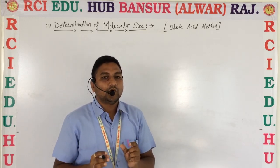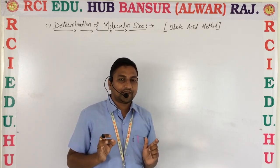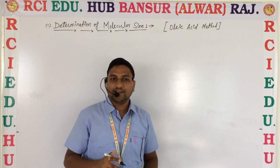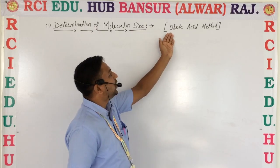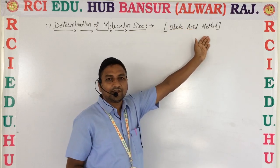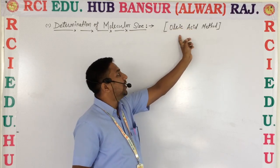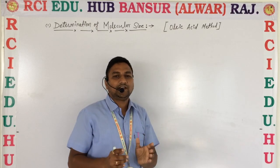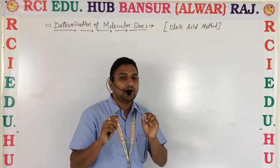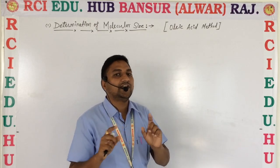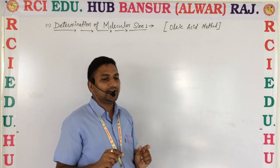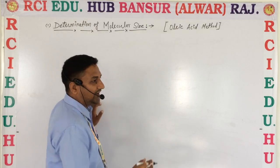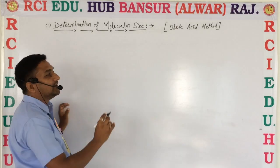The method we use to measure the size of very small molecules — particles so small that we cannot even see them — is called the oil film method, also known as the Oleic acid method or 'Oli Kaisip mehta' method. To understand this method, we need to understand how we measure such small particles.